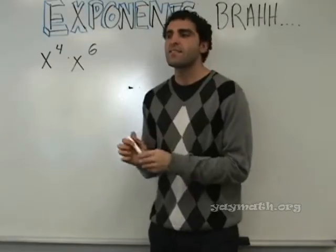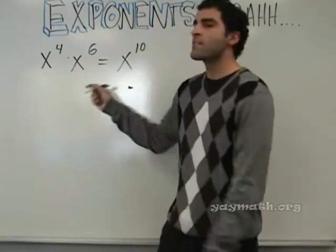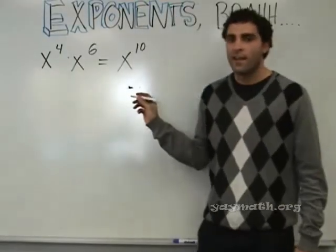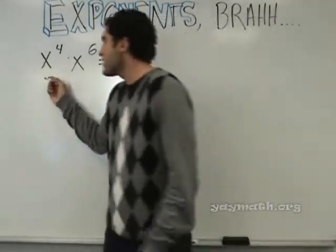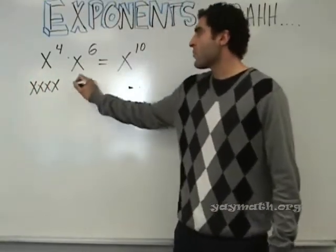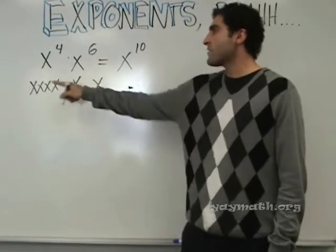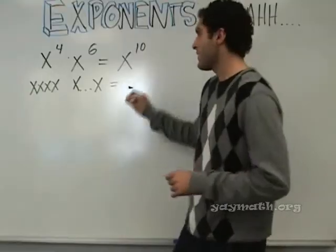Do we understand that this is a multiplication problem? This is x times x times x times x and then six more here. Six all together. That makes x to the tenth. All right, so that's the first rule.